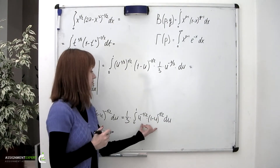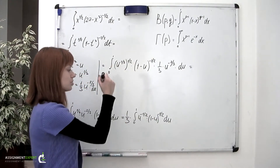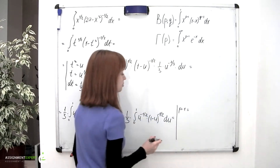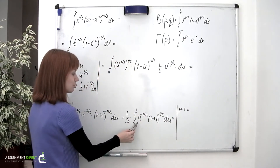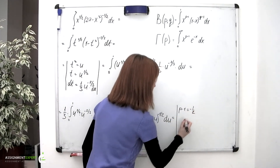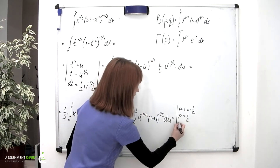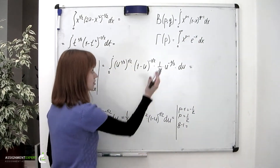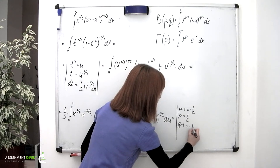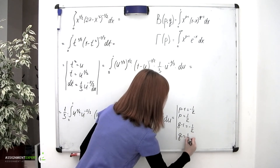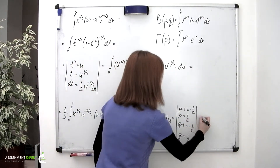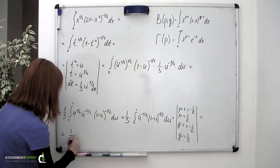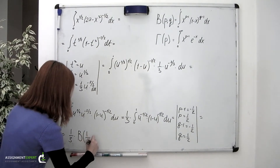This integral looks very much like the beta function. Going to the formula, we have p minus one — the power next to u — equals negative one-half, and therefore p equals one-half. Then q minus one — the power next to the expression in brackets — equals negative one-half, so q equals one-half as well. So we obtain one-third multiplied by the beta function of one-half and one-half.